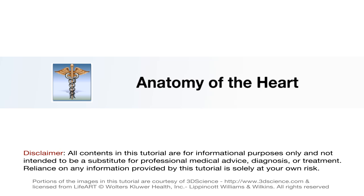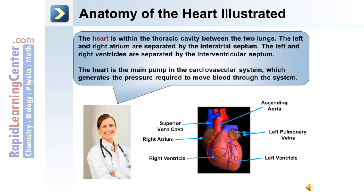Let's begin with the anatomy of the heart. This image depicts the surface anatomy of the heart. Blood returns to the heart through the superior vena cava and is delivered to the right atrium. Adjacent to the right atrium is the right ventricle. On the opposite side is the left ventricle and the left atrium, and the large vessel leading off the top of the heart is the ascending aorta.